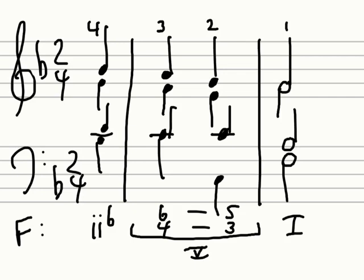It's important to note that the 6-4 happens on the downbeat, the strong beat. The resolution 5-3 happens on the second beat, the weaker beat of the measure. That's the feature of the cadential 6-4.